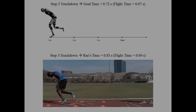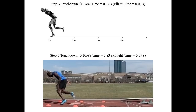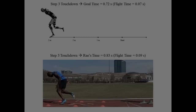Finally, we will look at step three touchdown. Ray's flight time after step two was 0.09 seconds, which is slightly slower than the gold medal model. Again, he has a little bit of excessive aerial time during all of the first couple of steps. Otherwise, all of his angles look pretty similar to the model.